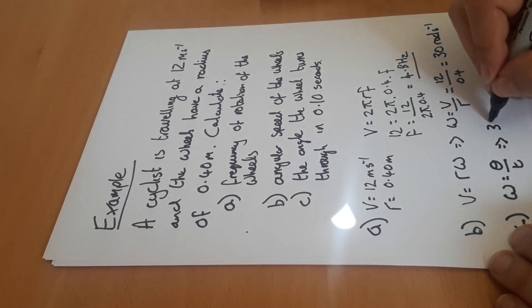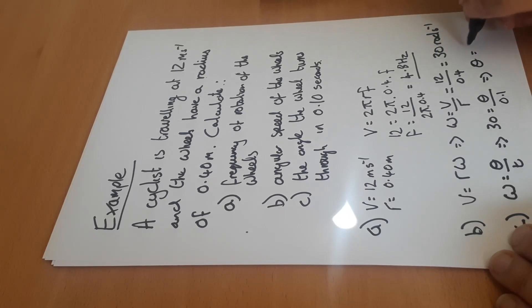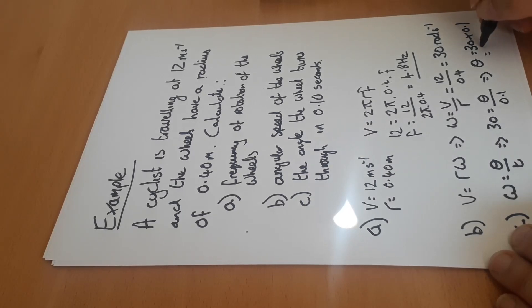Therefore 30 must equal our angle divided by 0.1. Therefore our angle is equal to 30 times 0.1, which equals 3 radians.